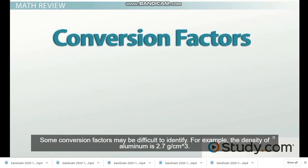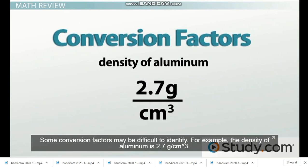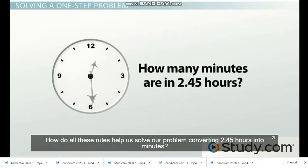Some conversion factors may be difficult to identify. For example, the density of aluminum is 2.7 grams per cubic centimeter. How do all of these rules help us solve our problem converting 2.45 hours into minutes?